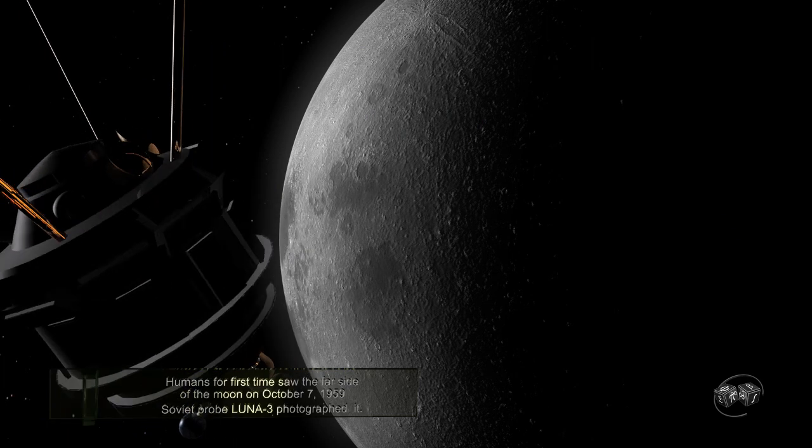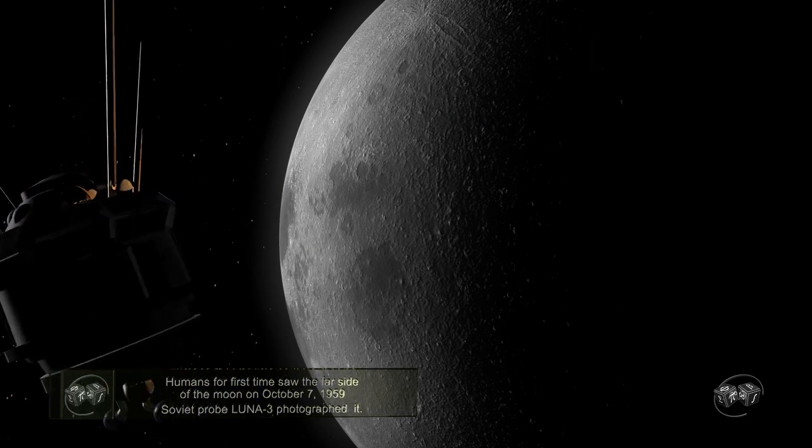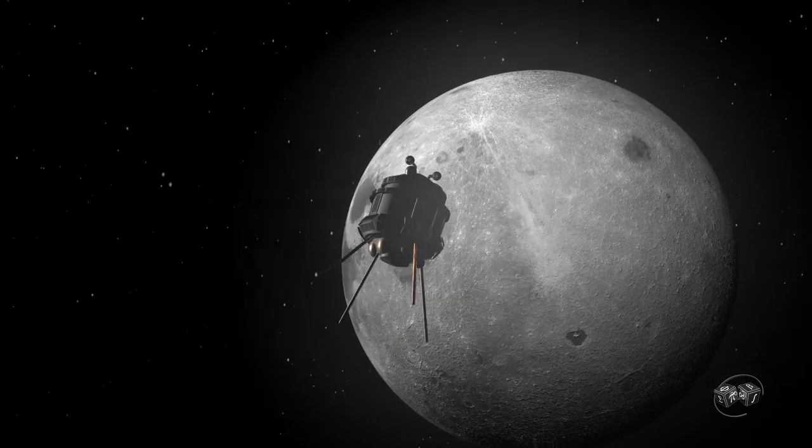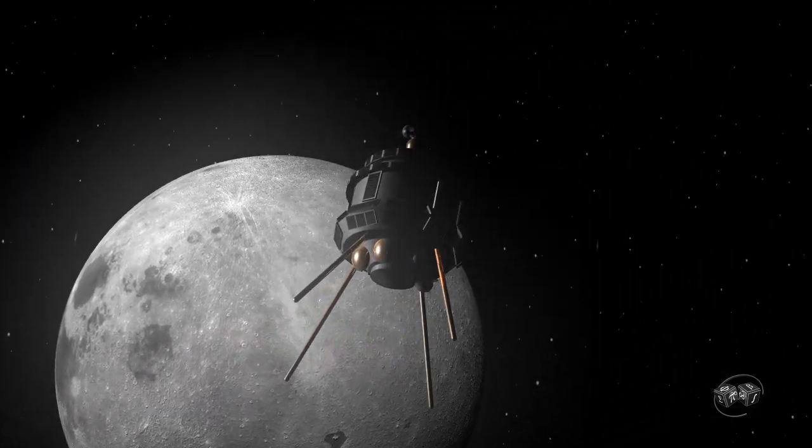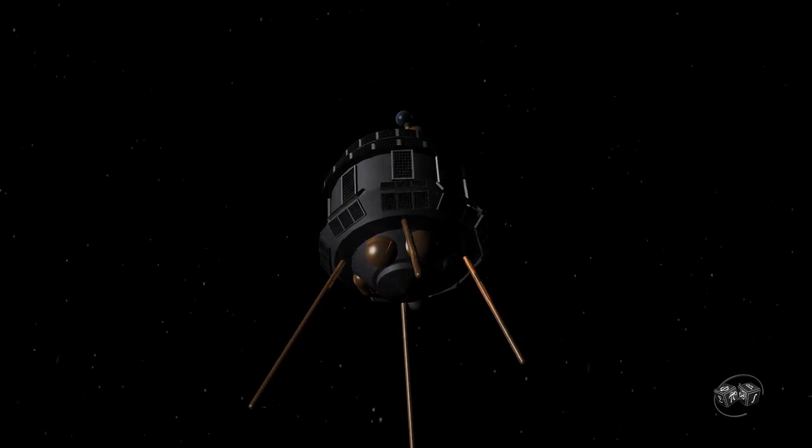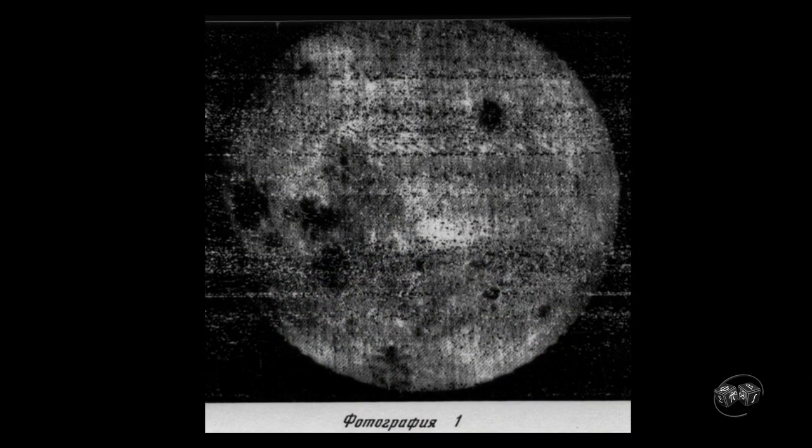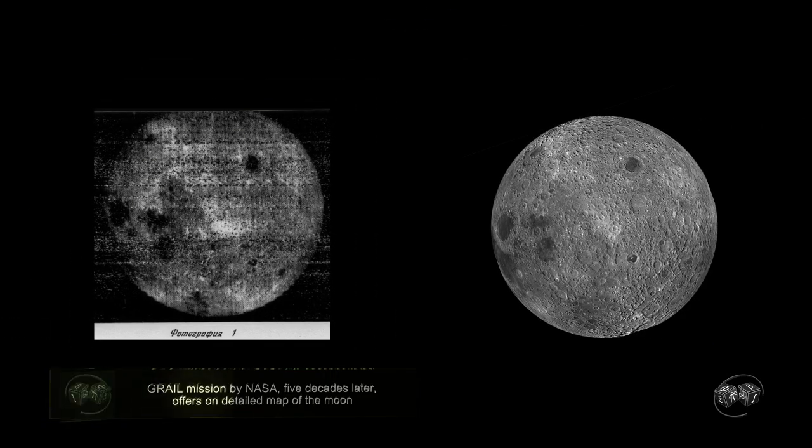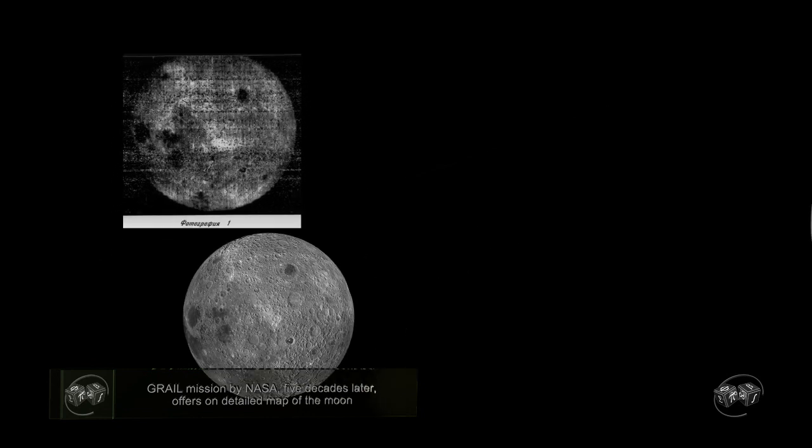The Soviet spacecraft photographed the far side of the Moon on October 7, 1959. Five decades later, we know in detail the map of the far side of the Moon through the Grail mission by NASA.